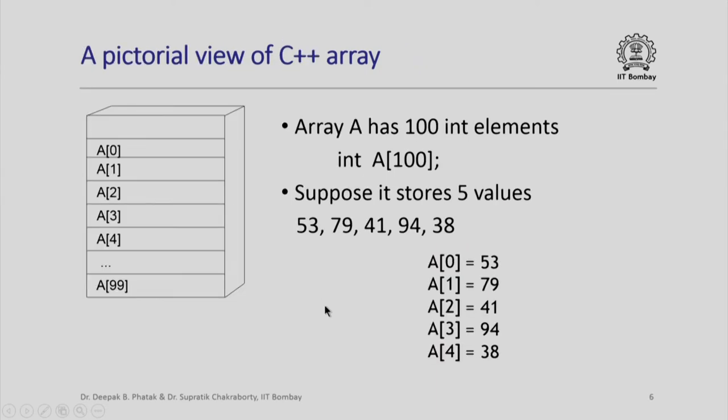This is pictorially represented here. If I declare an array a as int a[100], then it would be allocated consecutive memory locations but the very beginning element will be a[0], then a[1], a[2], a[3], etcetera. Suppose the array stores 5 values in its first 5 locations, then effectively it means that a[0] contains 53, a[1] contains 79, etcetera.